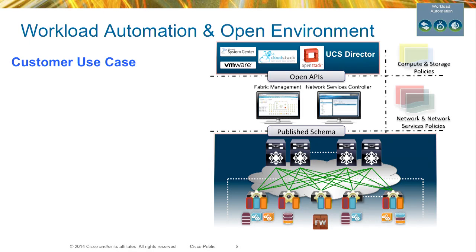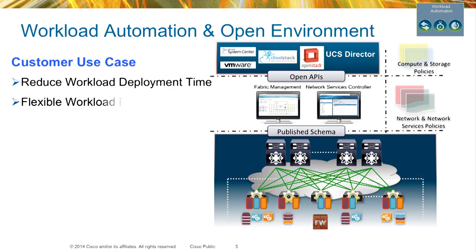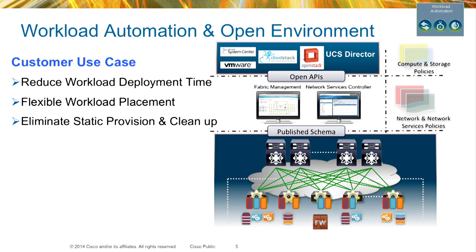Some of the customer use cases for workload automation are: reducing the workload deployment time — being able to bring up a workload instantaneously, from weeks to minutes. Also the flexibility of placing a workload anywhere you want in the network, utilizing resources that are idle. And eliminating static provisioning and cleanup — we no longer want to provision VLANs statically across all the boxes even when we don't need it. We want to do it on demand: when you need VLAN 20, allocate VLAN 20; when it's no longer in use, it cleans up after itself.